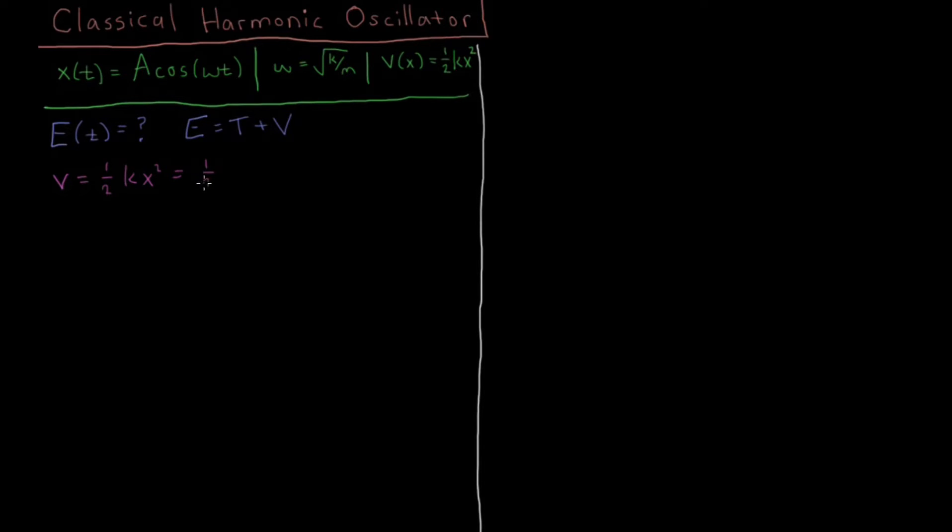so our potential energy over time is just (1/2)kA² cos²(ωt). We just took this trajectory through time and squared it, as is the case for x here.